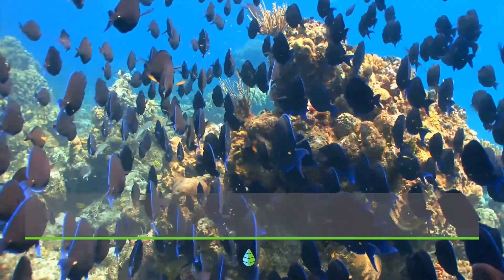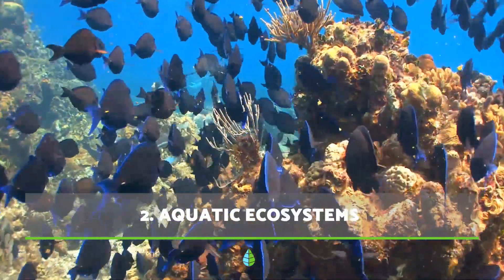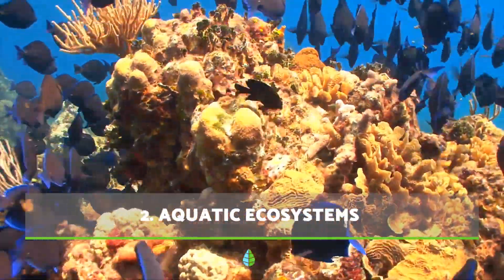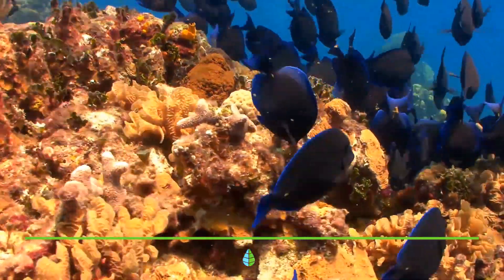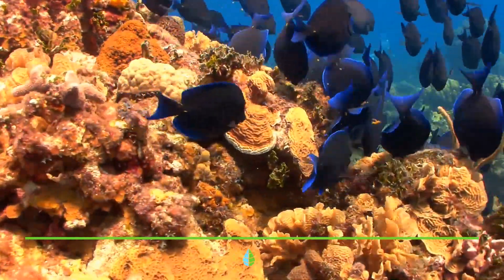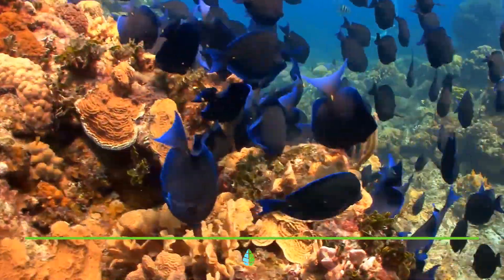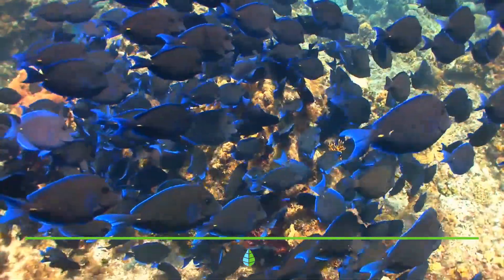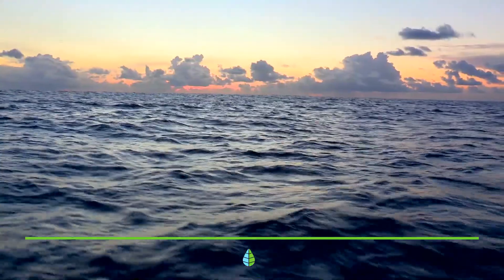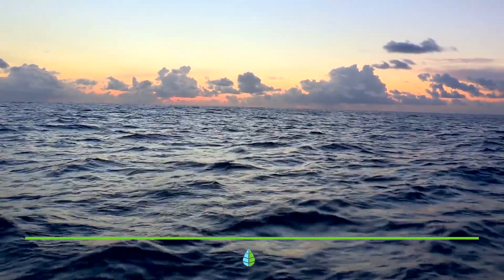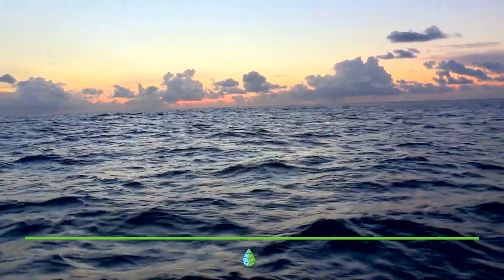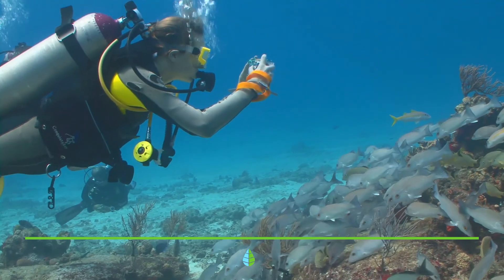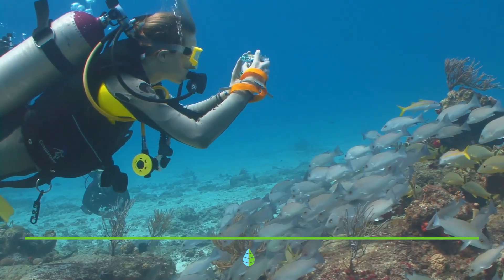Aquatic ecosystems are characterized by the presence of water as the main physical component. This water can be sweet or salty, so we find two types of aquatic ecosystems. Marine ecosystems include all salt water ecosystems, such as oceans, seas, reefs, shallow coastal waters, etc.